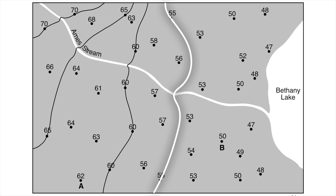You might notice something a little funny — when I crossed Ames stream, I bent the contour line, curving it pointing away from the lake. If you look at the other contour lines, they all have a similar bend when crossing the stream. That has to do with the shape of the stream bed itself, which we'll discuss more in a future video. For now, just know that contour lines bend when they cross a stream or river, and they bend pointing upstream — in the opposite direction that the stream is flowing.